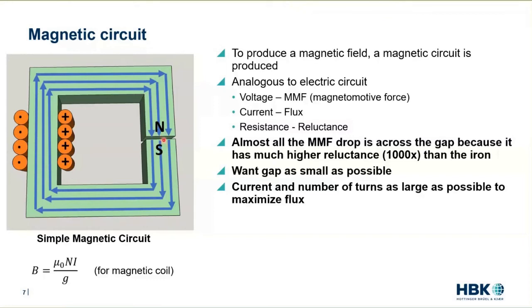The reluctance is highest across the gap. The reluctance of an air gap or a vacuum gap is about a thousand times higher than in steel or iron.